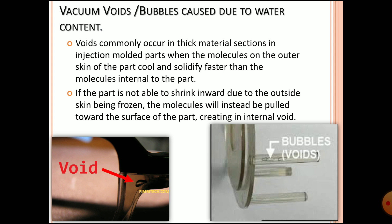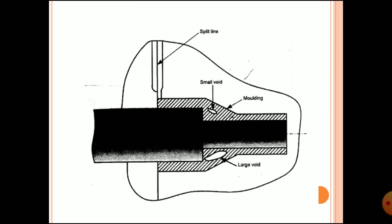Voids commonly occur in thick material sections in injection molded parts when the molecules on the outer skin cool and solidify faster than the molecules internal to the part. If the part is not able to shrink inward due to the outside skin being frozen, the molecules will instead pull towards the surface of the part, creating internal voids.